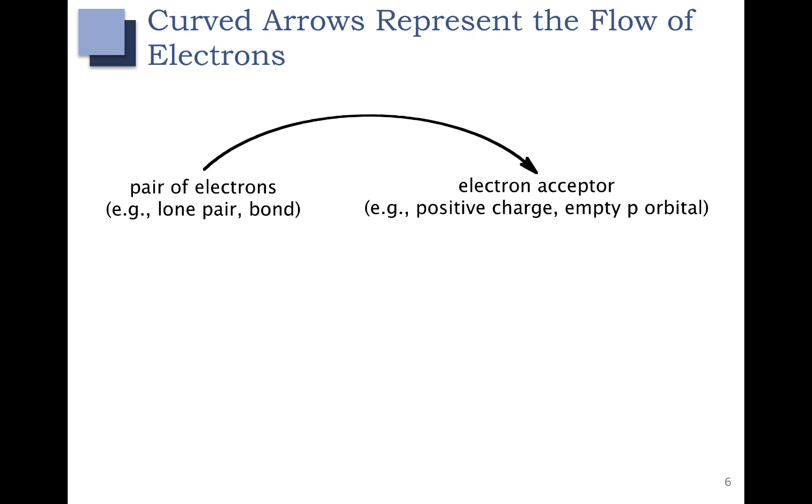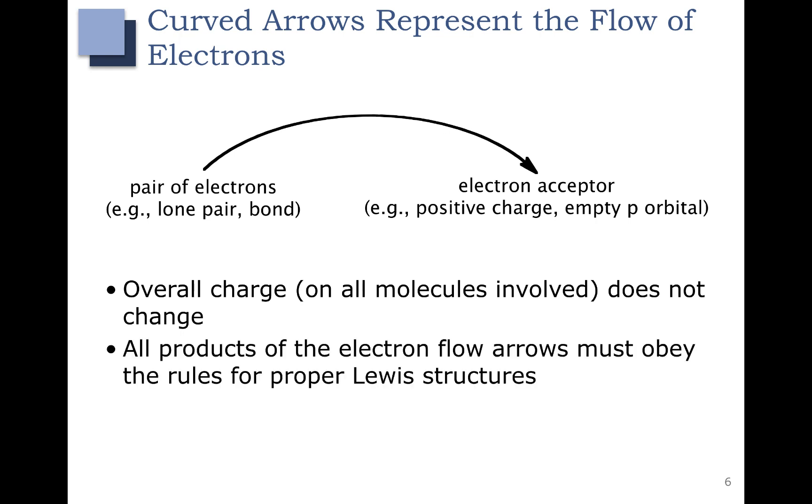Remember that when we were doing this, our overall charge of the molecules does not change. And that the products of the electron flow arrows must obey the rules for proper Lewis structures. So now we're going to apply curved arrows to some of the reactions that we've been doing.